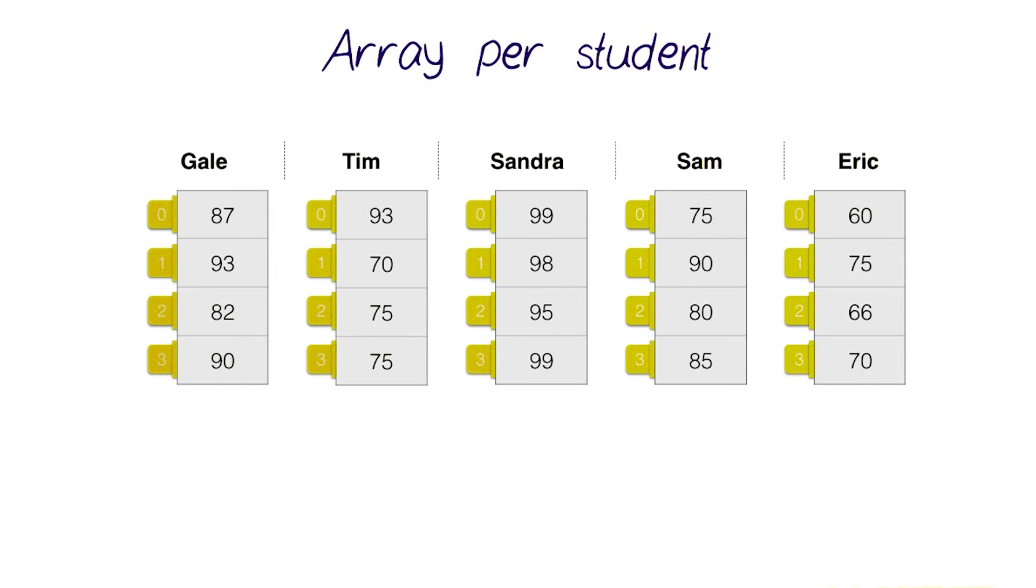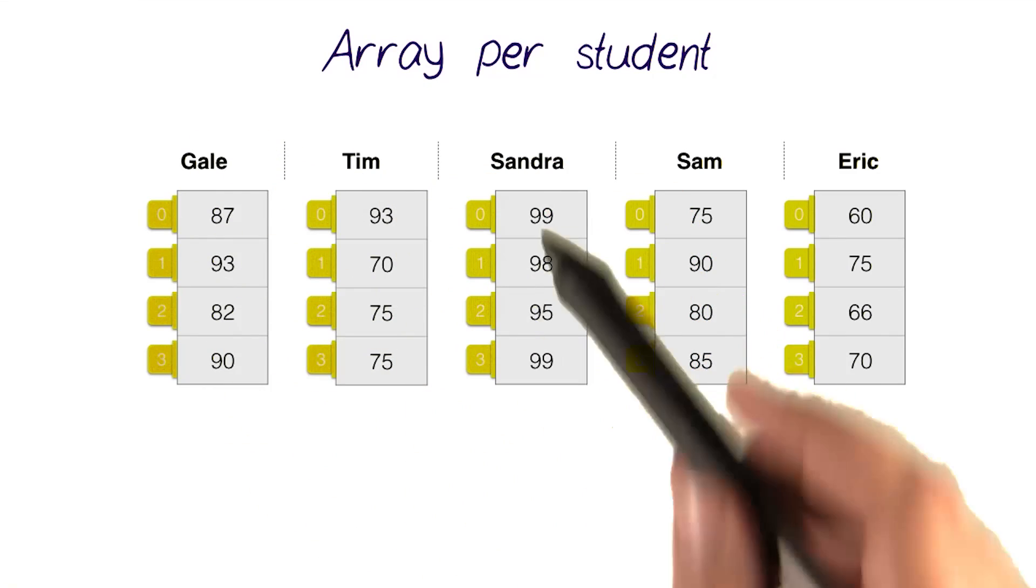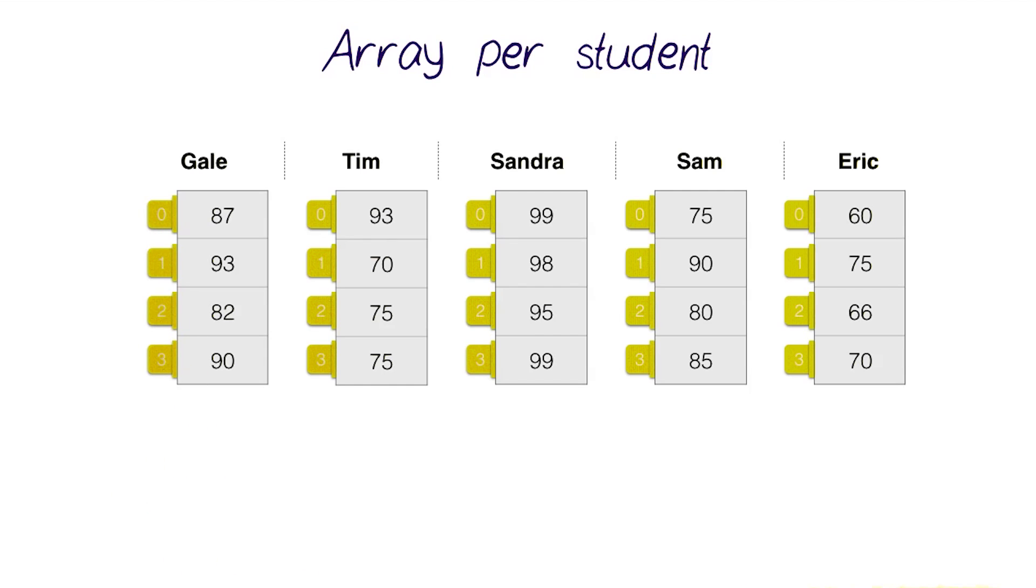So, one solution is to store the grades in multiple arrays. We could have an array for every student storing the grades for all four subjects. And then we could use loops, for example, to calculate the average per student.